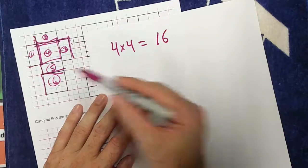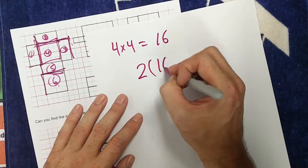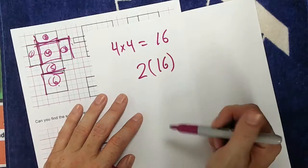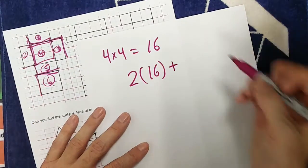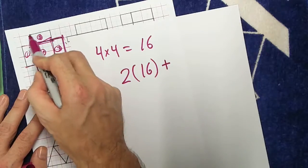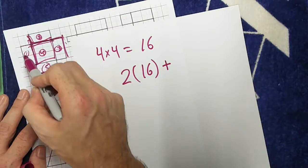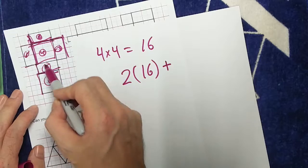But how many of them do I have? Well, I have 2 groups of 16. And then, what else do I have? I have this 2 by 4. Well, how many 2 by 4s do I have? I have 1, 2, 3, 4.